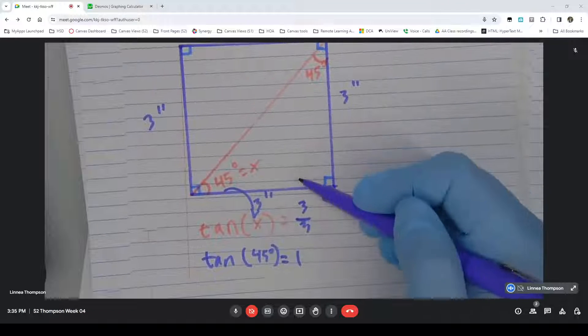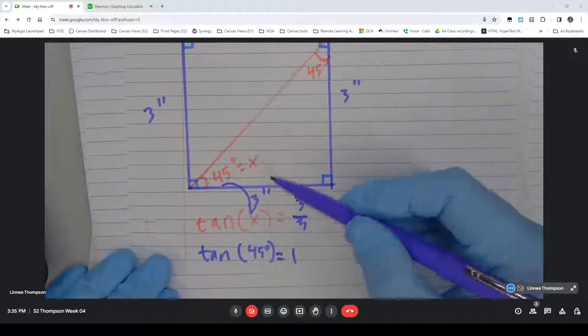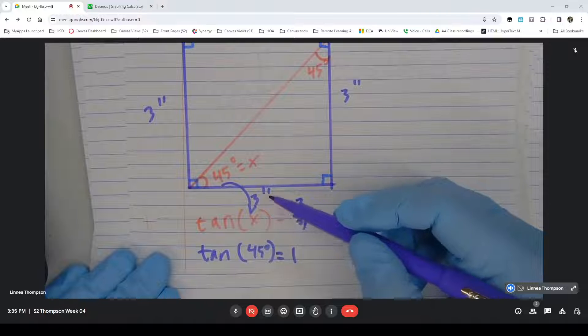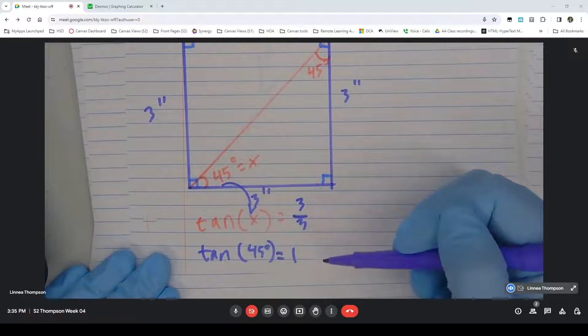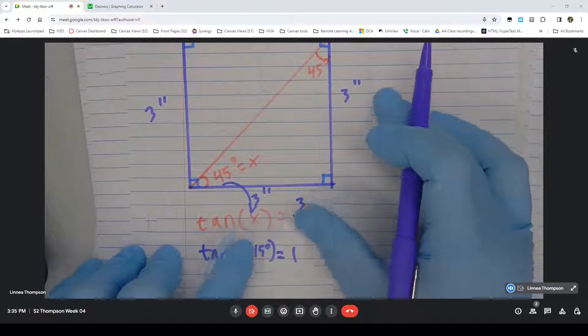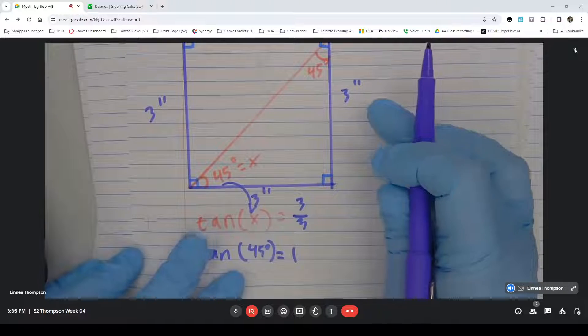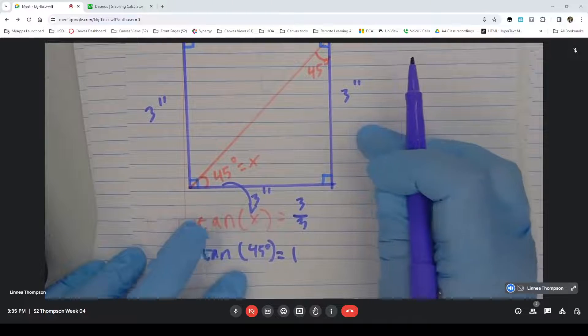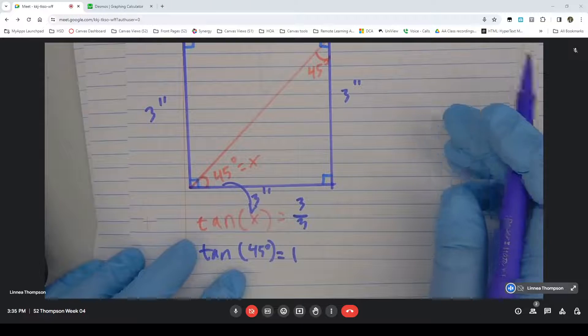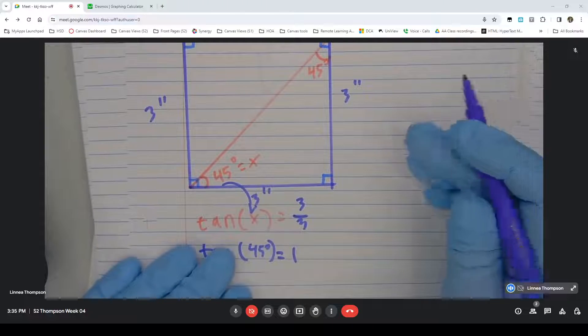So this is true for any right isosceles triangle. It doesn't matter that that's 3. 3 divided by 3 is 1. If we zoomed this in or out so that it was instead 2 and 2, or 1 and 1, or 7 and 7, or x and x, as long as it's the same number both times,